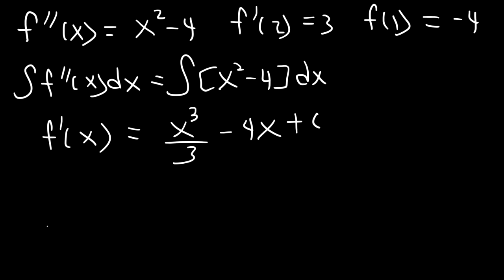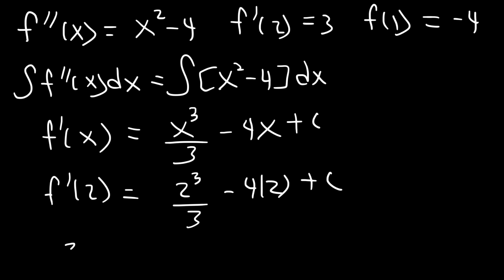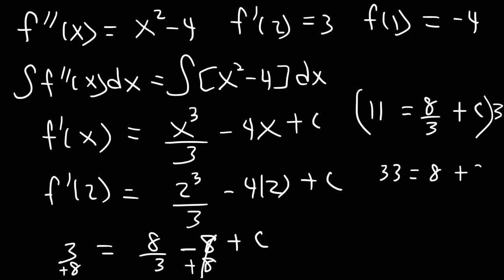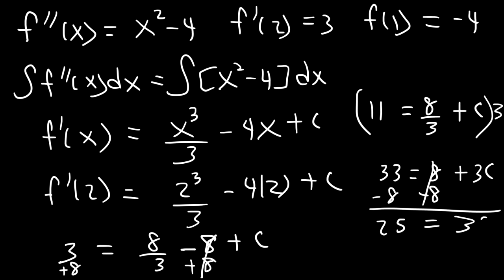We know f'(2) is 3, so let's replace x with 2: 2 to the third power divided by 3 minus 4 times 2 plus c equals 3. 2 cubed is 8 and 4 times 2 is 8. So 3 equals 8 over 3 minus 8 plus c. Adding 8 to both sides gives 11 equals 8 over 3 plus c. Multiplying everything by 3: 33 equals 8 plus 3c. Subtracting 8: 25 equals 3c, so c equals 25 over 3.